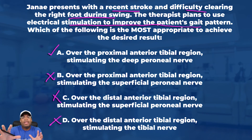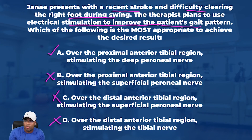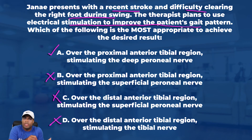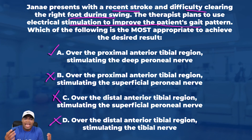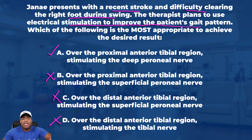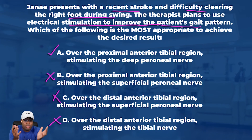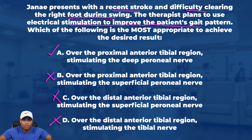When you pull this question apart, what is it really asking? It's asking: what motion needs to happen — dorsiflexion. What muscle does it — anterior tib. And what nerve innervates it — deep peroneal nerve. Answer A is the only one with deep peroneal nerve in it. So if you just knew the innervation of the anterior tib, it's A all day long. It really came down to understanding what nerve innervates the anterior tib, and I expect these types of fundamental nerve innervation questions to come up on the NPTE.